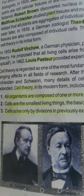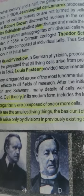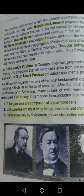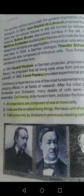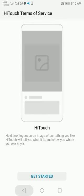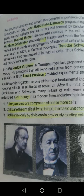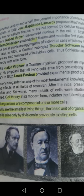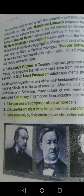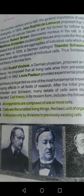This is the modern form of cell theory. The first postulate is: all organisms are composed of one or more cells — meaning they are either unicellular or multicellular organisms. The second is: cells are the smallest living thing and the basic unit of organization of all organisms. The third is: cells arise by division from previously existing cells — any new cells are formed from pre-existing cells.